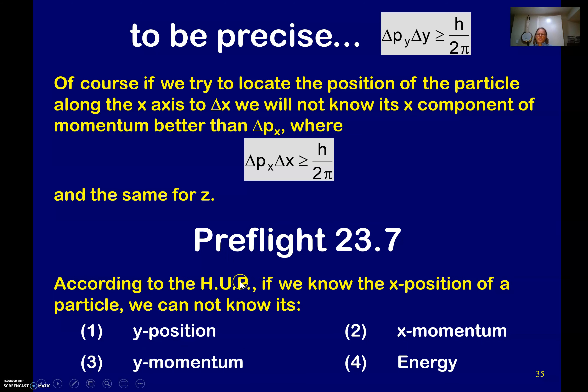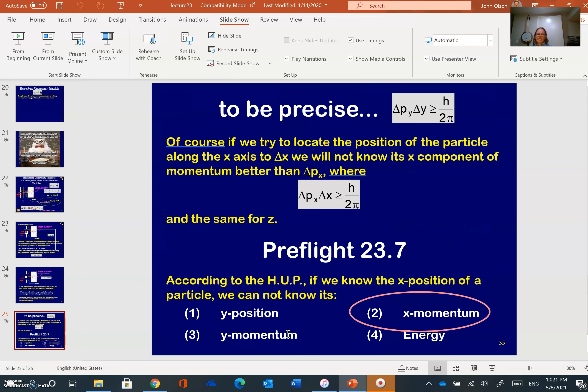Hey, according to the Heisenberg uncertainty principle, or HUP, if we know the X position of your particle, we cannot know, if we know the X position, we cannot know its X momentum. At least not very well.